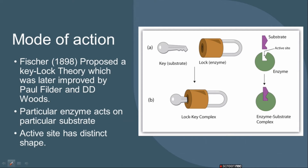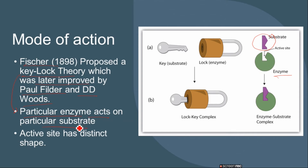If we talk about the mode of action, there are certain theories proposed by scientists. The first theory in our book is Fischer's, who said that enzymes work like a key or lock — this is called the Key and Lock Theory, which was improved by Paul Filder and DD Woods. In this theory, a particular enzyme acts on a particular substrate, just like a small key fits a lock, so a substrate binds to the enzyme's active site to carry out the chemical reaction.